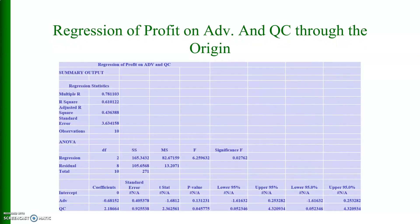Here I am also running the multiple linear regression model but this time I have suppressed the intercept. The sign of the advertising expenditure became negative, but the sign of the quality control is still positive. There is a lot of difference between these results and the results of the previous model.